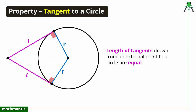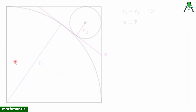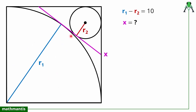Now we will use this property to solve this question. To find the length of x, I will divide this length into three parts. This will be the first part, this will be the second part, and this will be the third part — I will name them a, b, and c. So x is nothing but equal to a plus b plus c.